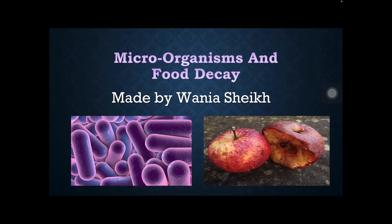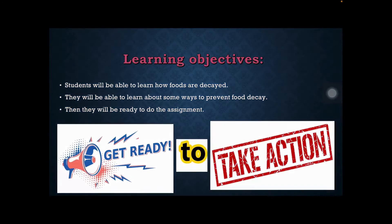The second picture is a completely rotten apple that looks very disgusting. Learning objectives: students will be able to learn how foods are decayed, learn about some ways to prevent food decay, and then they will be ready to do the assignment. Get ready to take action!